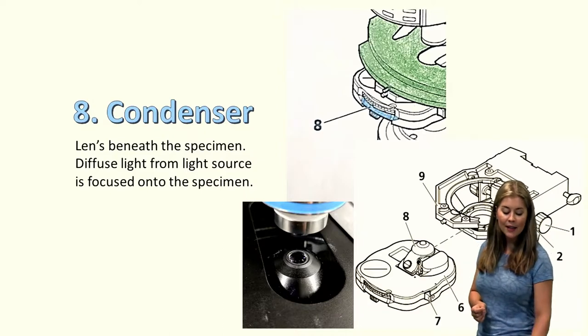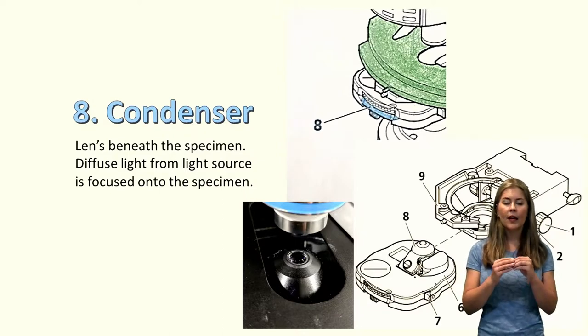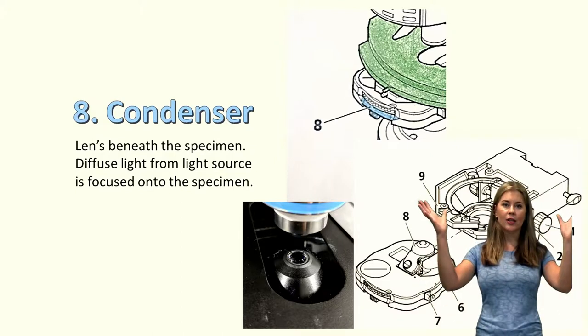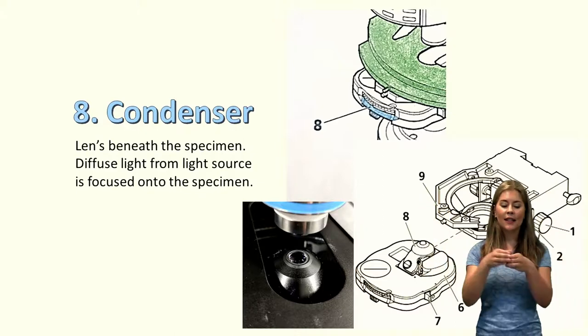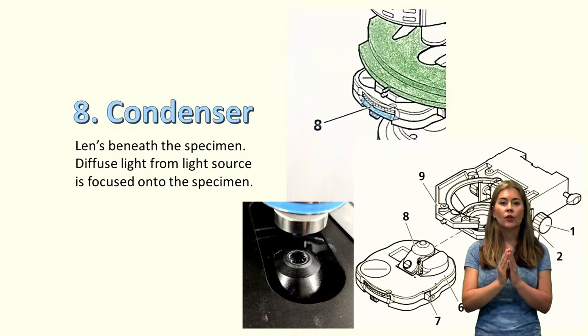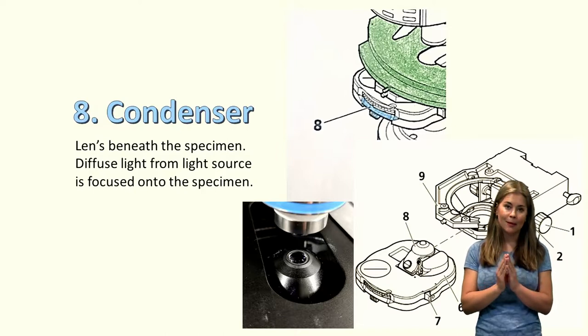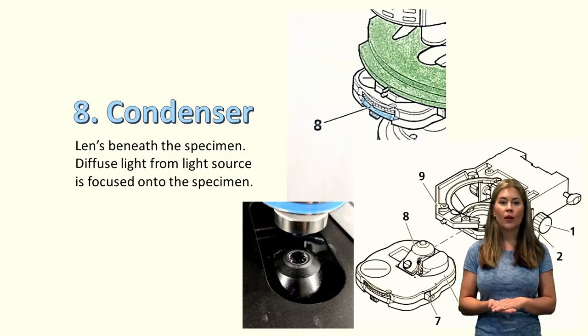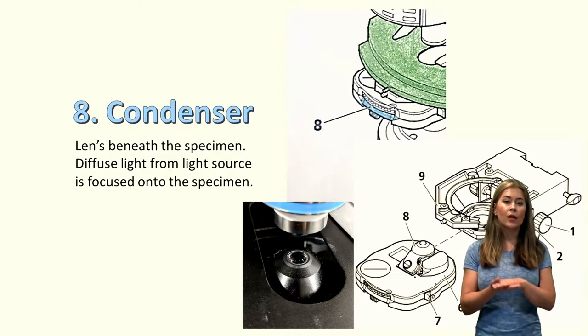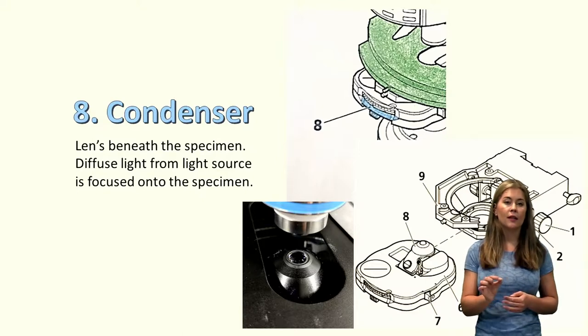Now the condenser is a lens that lies below the stage. The condenser collects light from below, so diffuse light going in all directions. And it condenses it into a single stream of light which is focused onto your specimen. So by moving the stage up and down really what you're doing is moving the condenser and the stage together closer and further away from your objective until you hit that nice focus.